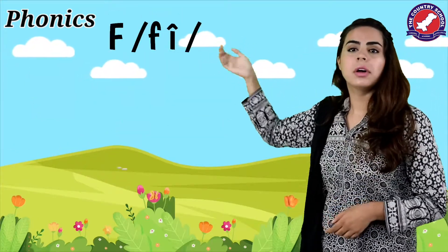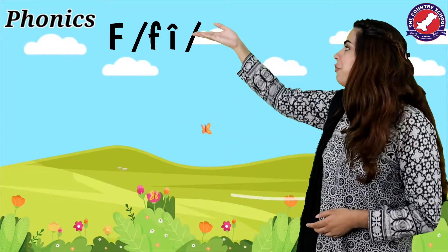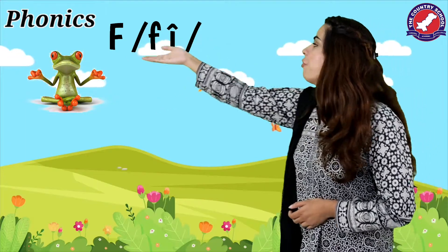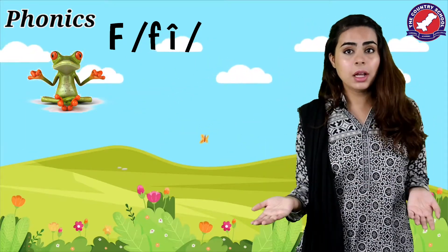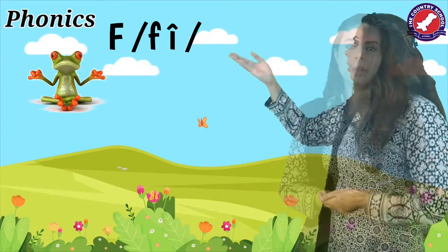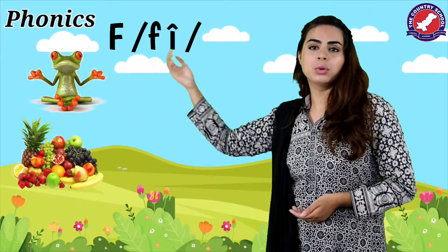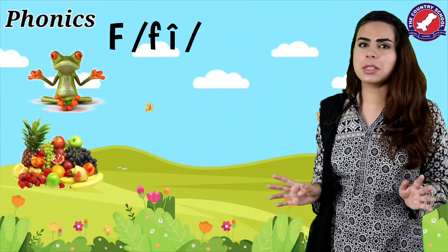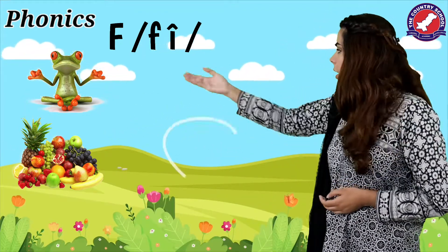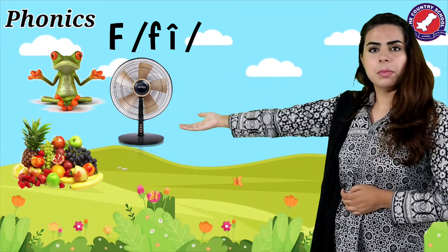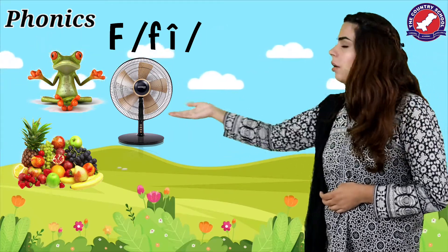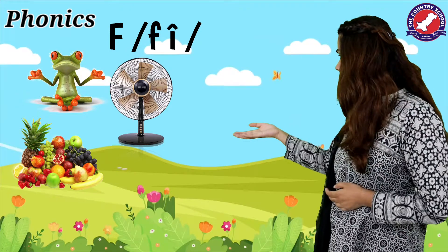Now we have the sound of F. F, frog. Alright, F, frog. Can you name any other object starting from the sound of F? Come on, I'm sure you know all of them. F, fruit. You all like fruits, right? F, fruit. What is this? F, fan. F, fan.